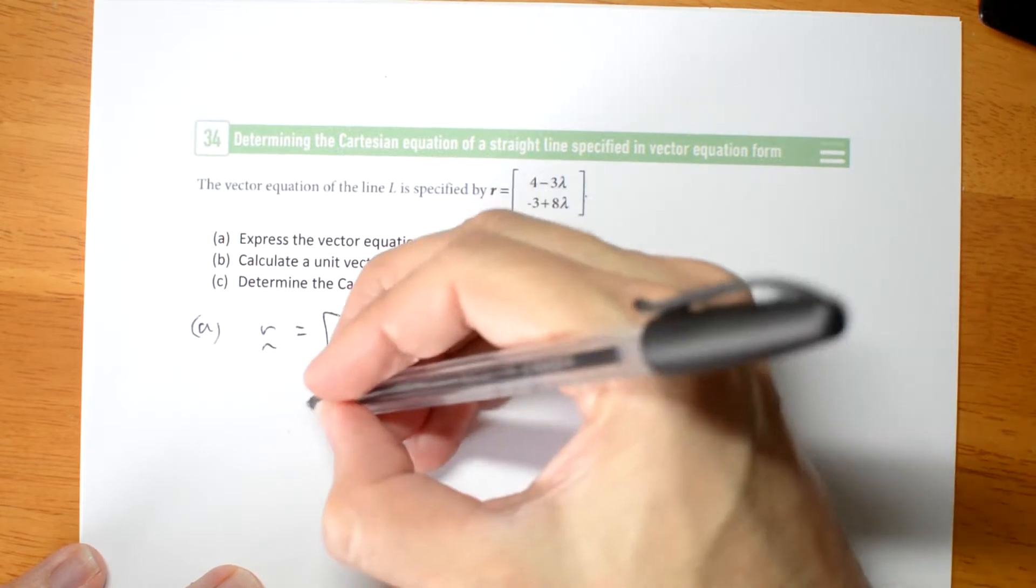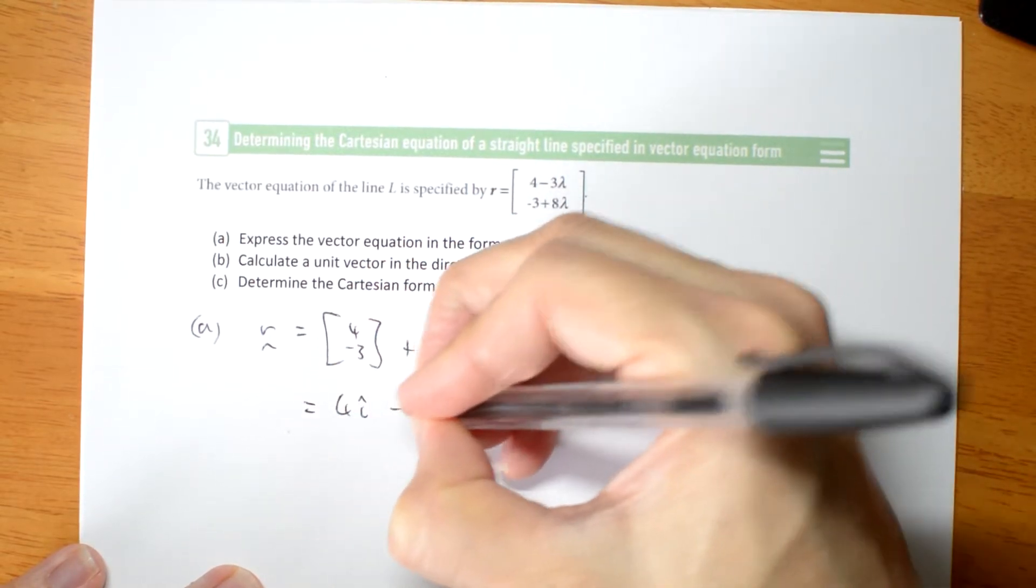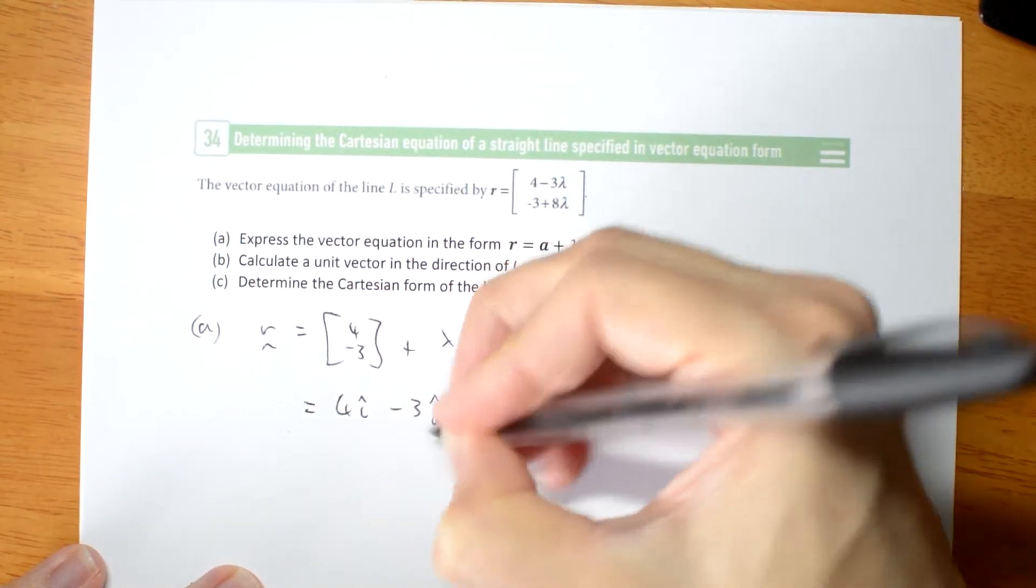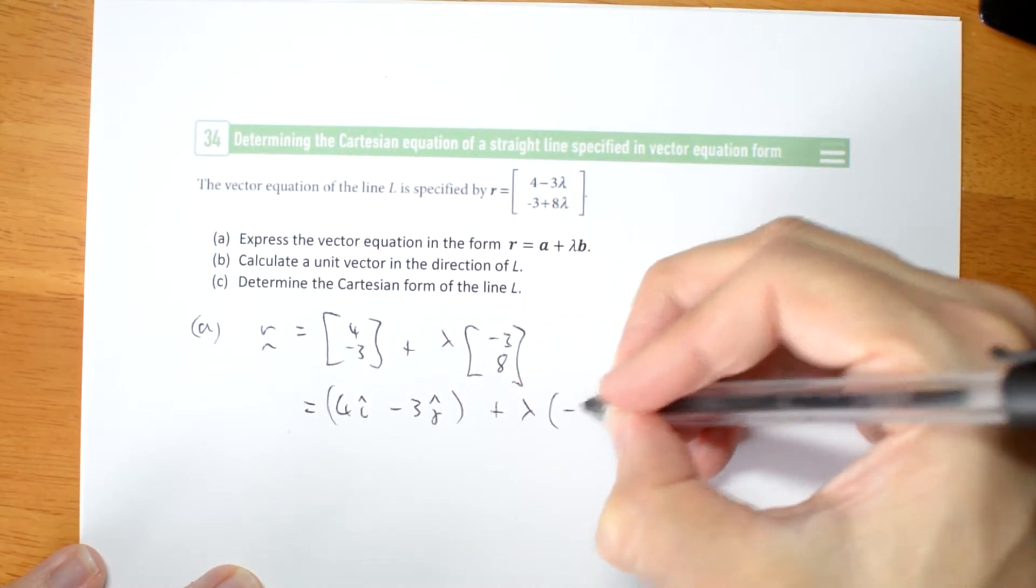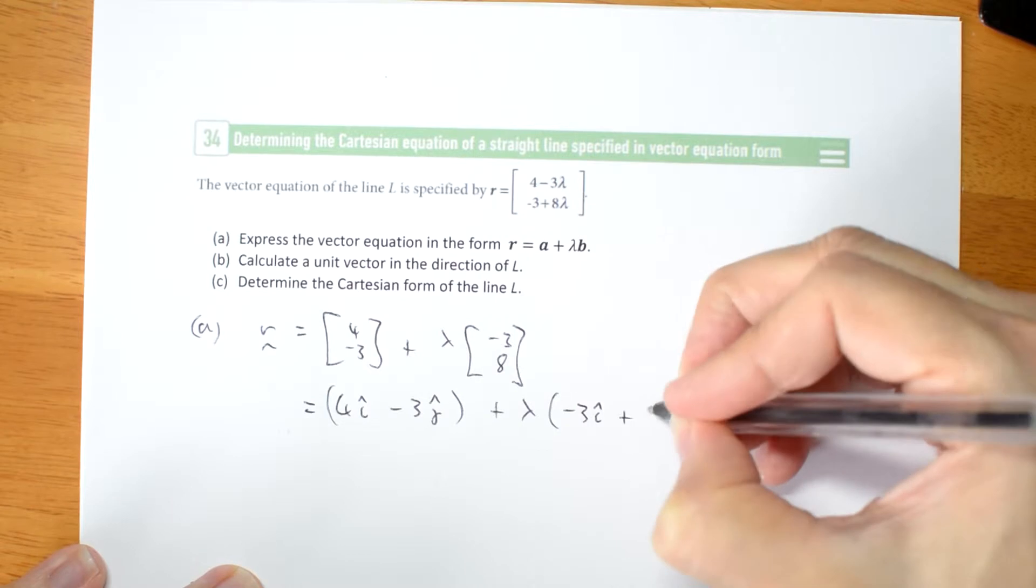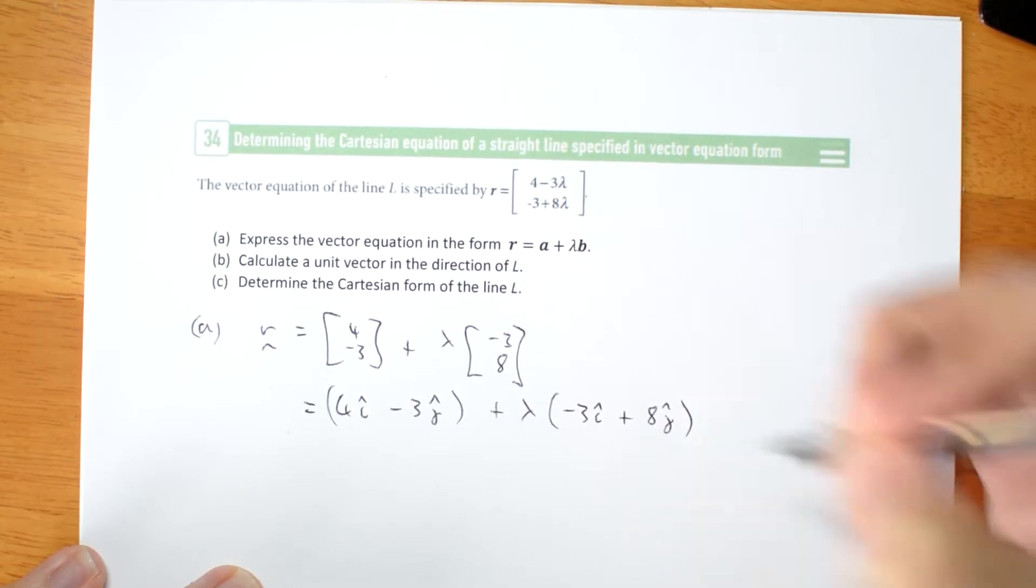If you prefer, you can use i's and j's: 4i minus 3j plus lambda times negative 3i plus 8j. You can choose whichever you prefer.